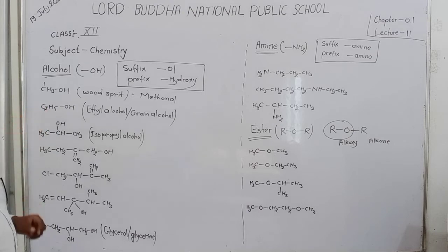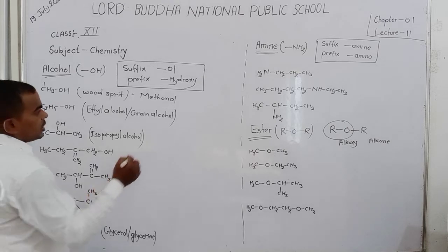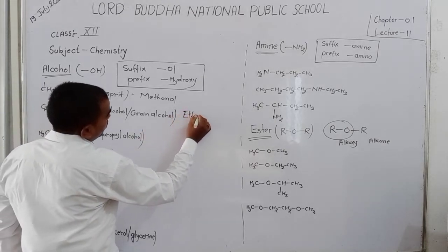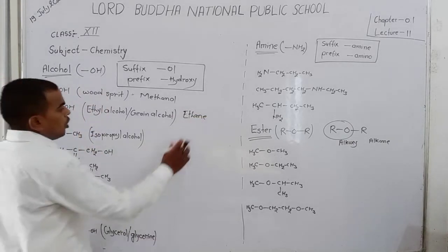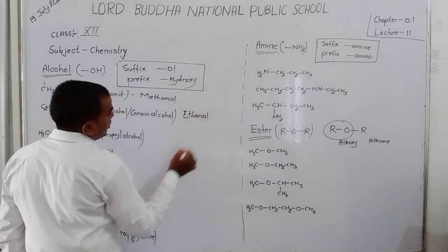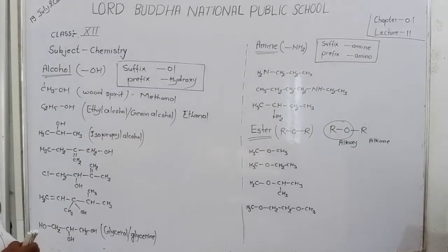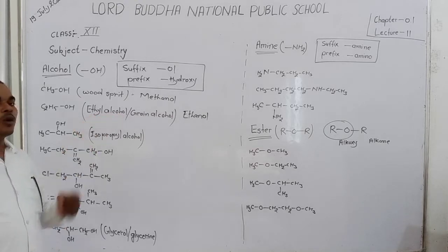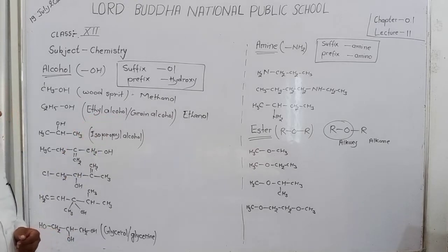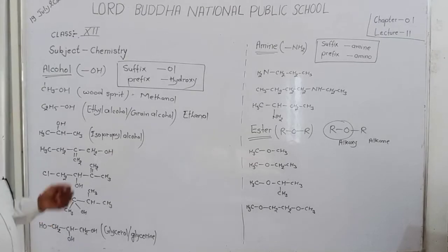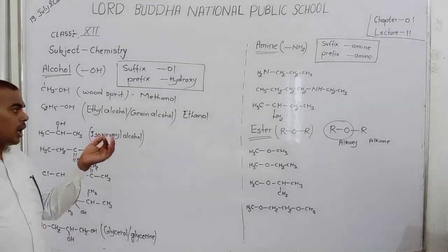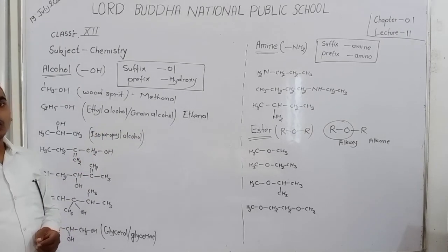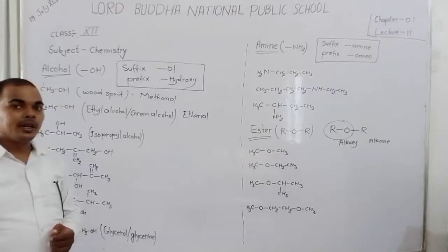Next, C2H5OH. Here two carbons are present. For two carbons we write 'ethane', and for the OH group we write '-ol'. So the name of the compound is Ethanol. The common name of ethanol is Ethyl Alcohol. Ethyl Alcohol is obtained from grains, so it is also known as Grain Alcohol.